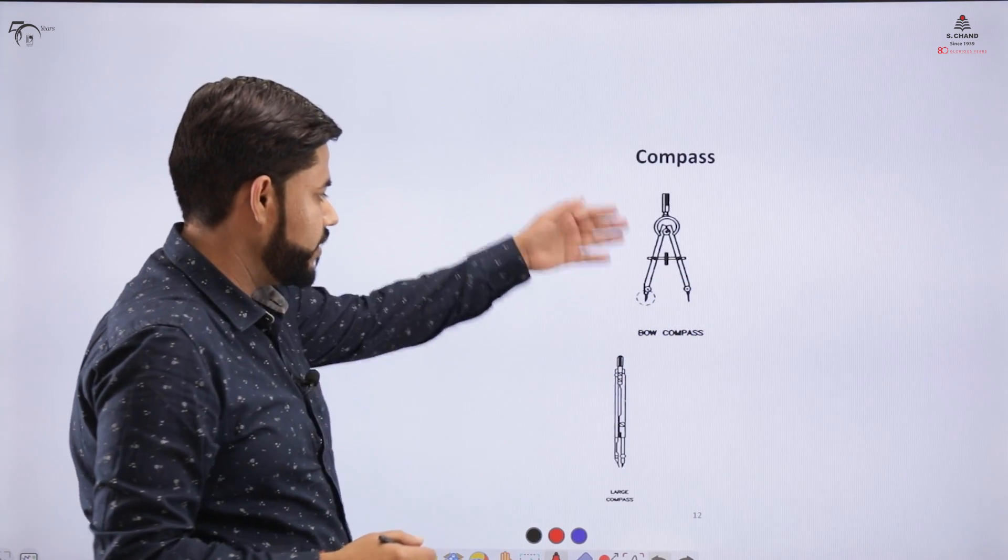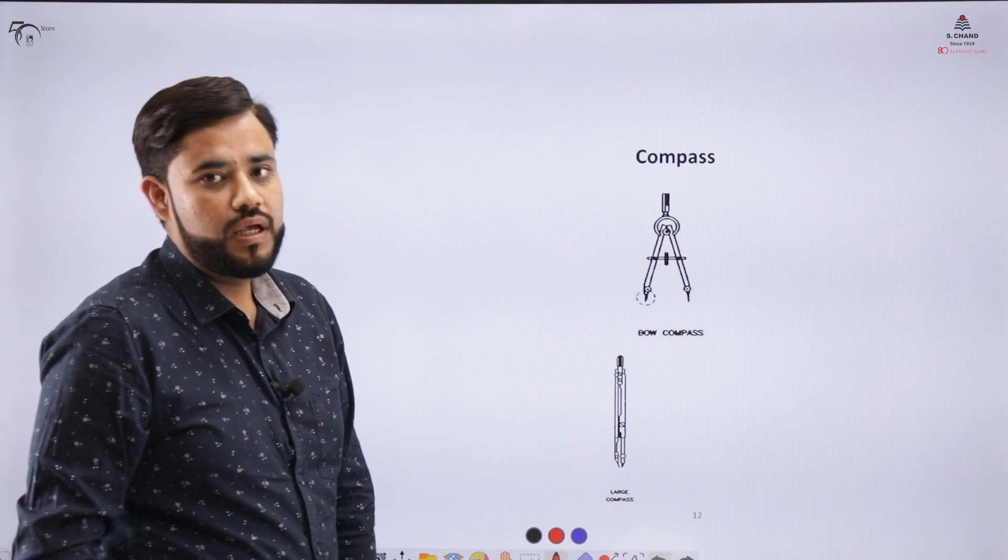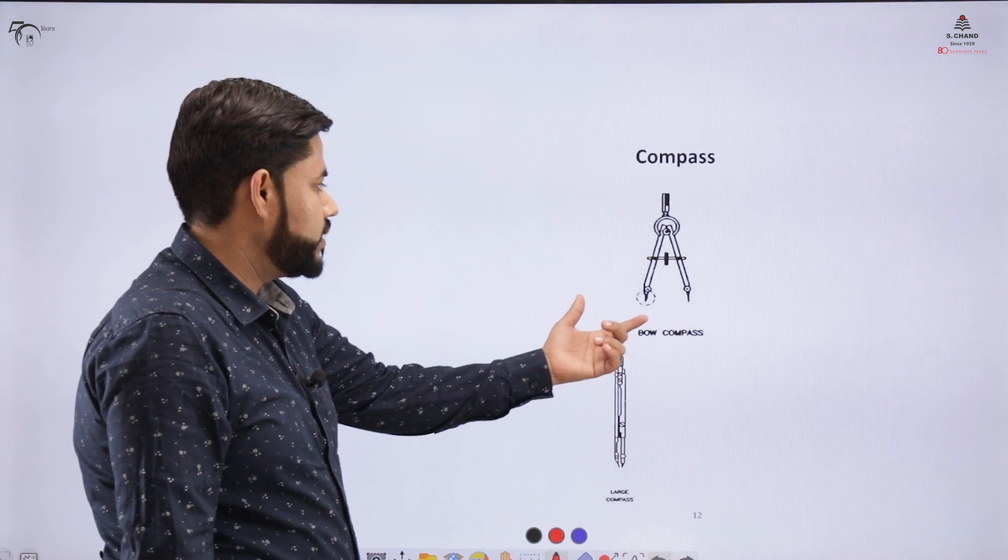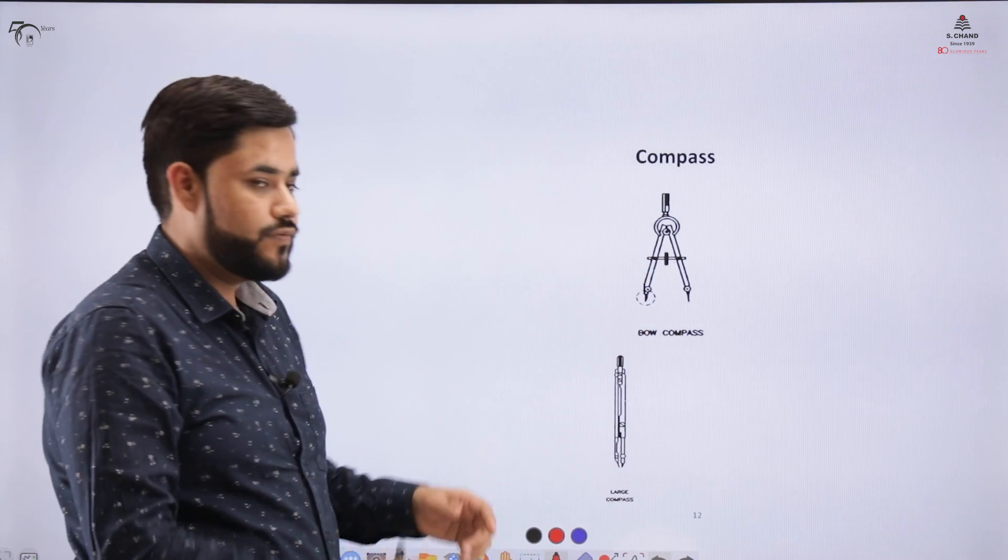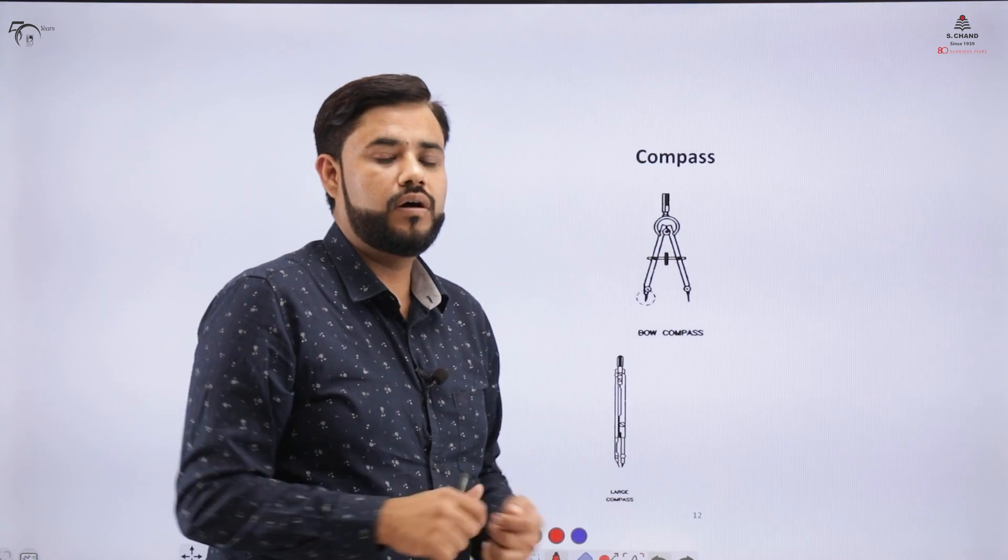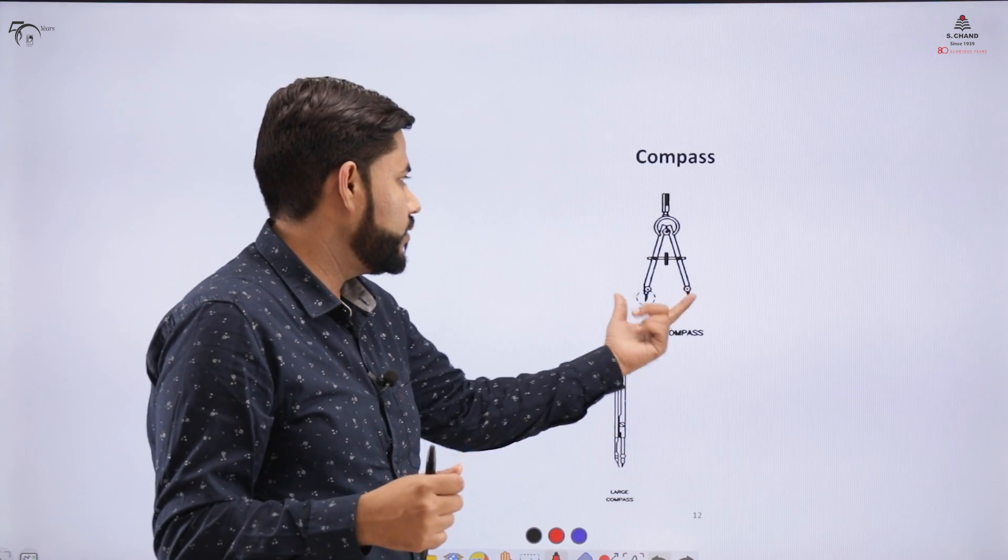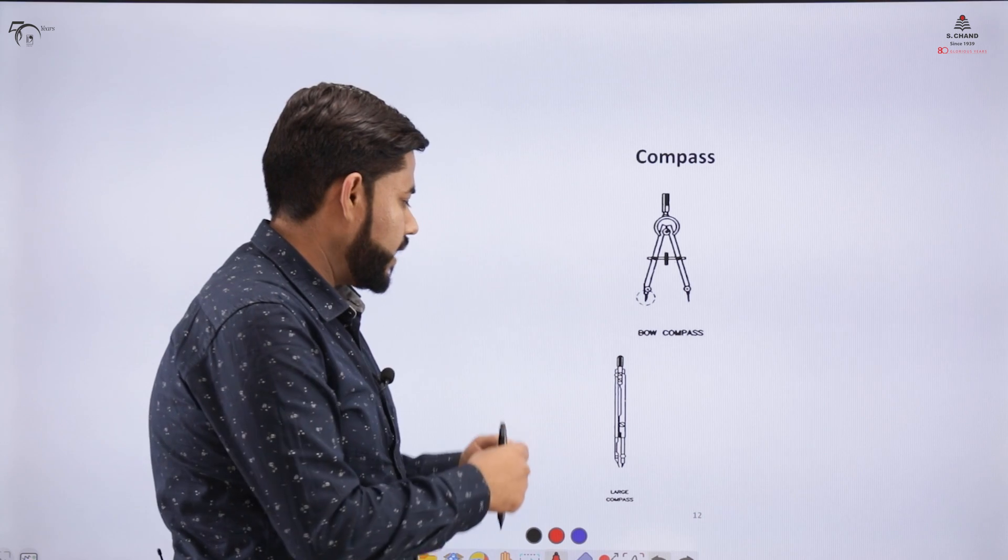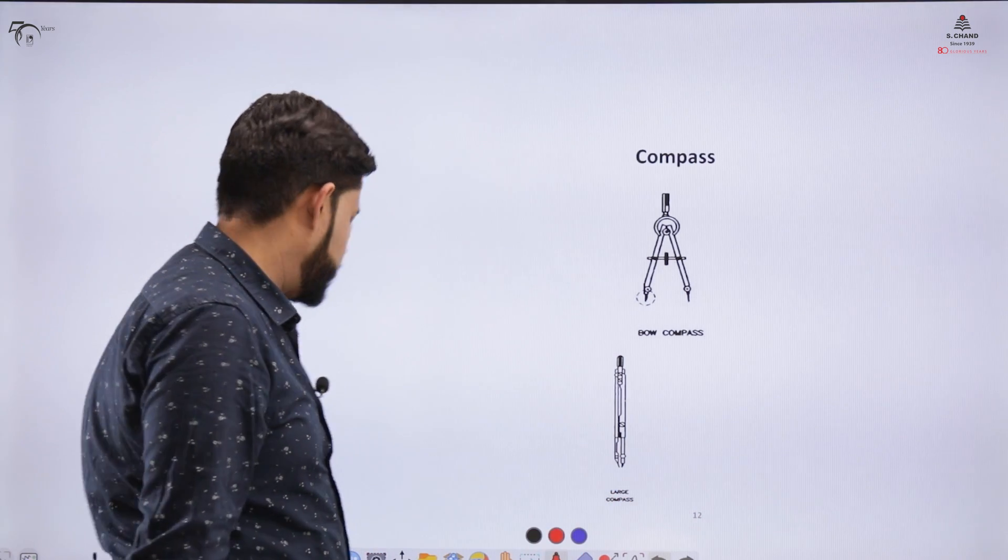Before coming to the mini drafter, let me show you the compass part. The compass has several categories. If you want to draw a circle of larger diameter you can use a bow compass. For extra large you can use a large compass.